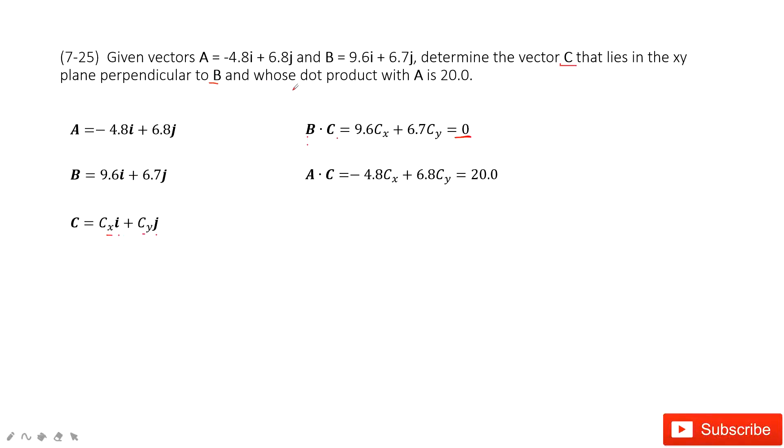And it also tells you the vector C dot product with A is 20, so A·C equals 20. So we just input these A, B, C vectors inside. We get these two equations, two formulas.